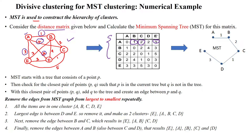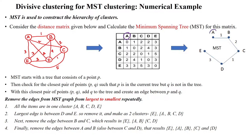From the distance matrix, we construct the minimum spanning tree. We will select any one vertex as a source and keep on constructing the minimum spanning tree. Here, A is selected as the source and is added into the minimum spanning tree.